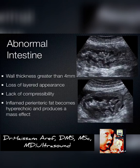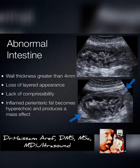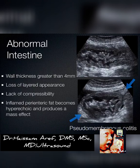When you have abnormal bowel you get loss of the layered appearance — everything starts to get stuck together. Things get tacked down to one another and no longer slide and slip easily. In normal individuals when you compress the bowel they're all slipping and sliding — it's called the sliding organ sign. When you have abnormal intestine you lose that sliding, that layered appearance, and you lose the compressibility. Specifically with appendicitis, it's a non-compressible tubular structure.